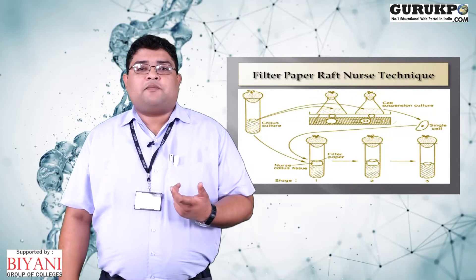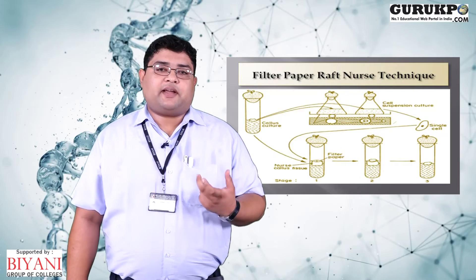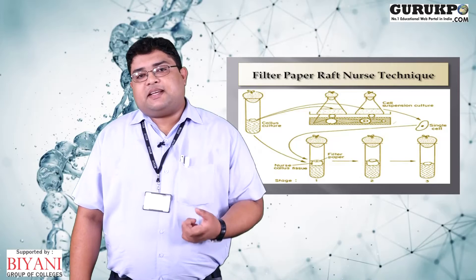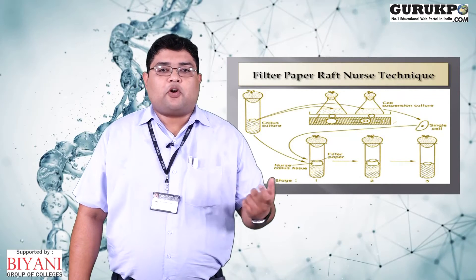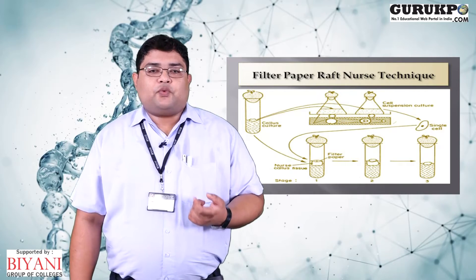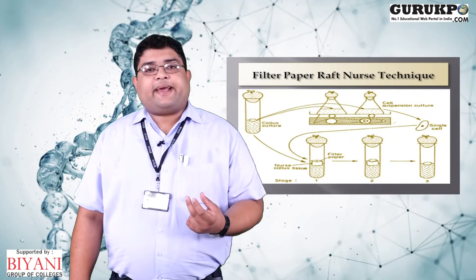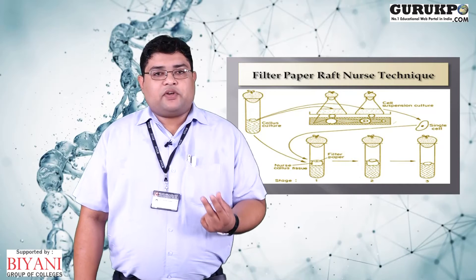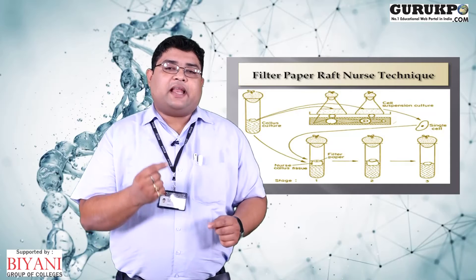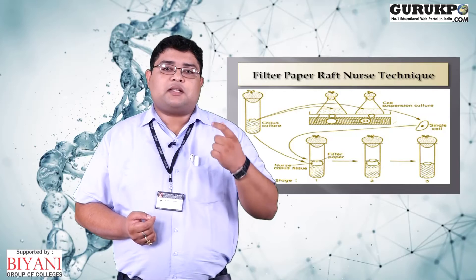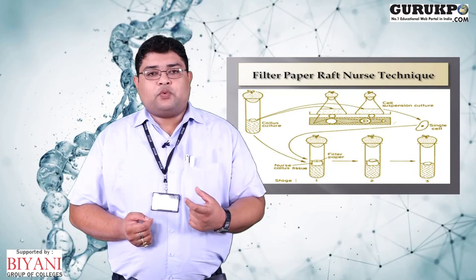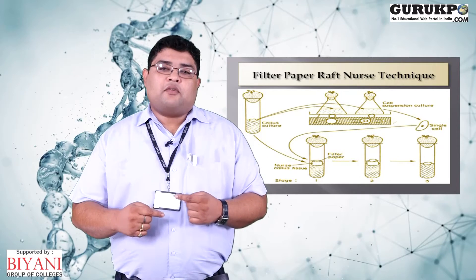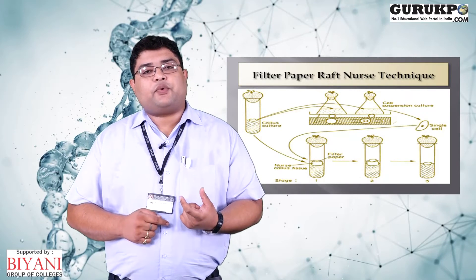In the filter paper raft nurse technique, we first take initially growing callus of the same or another species. This technique is used for the growth of cells that are not growing easily in cell cultures. We take fast-growing callus pieces and grow them on normal MS media for 30 days. After 30 days, we take an 8mm × 8mm sterile filter paper and place it over the growing callus pieces, then allow this to grow for a further 10 days. During those 10 days, the filter paper becomes wetted with the water and nutrient content of the agar.